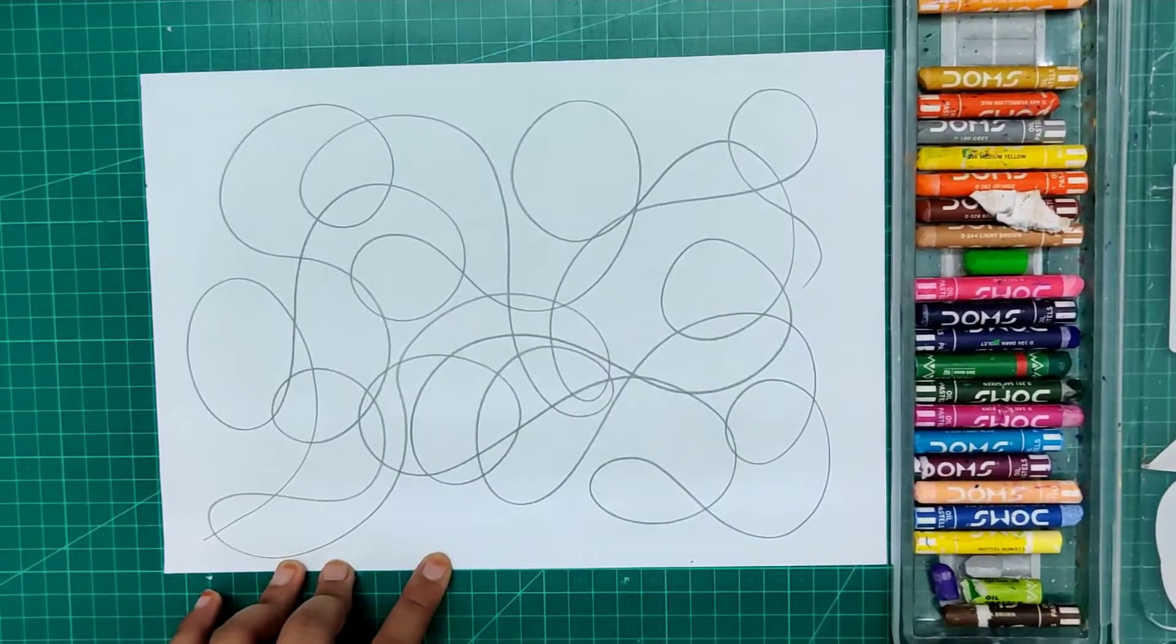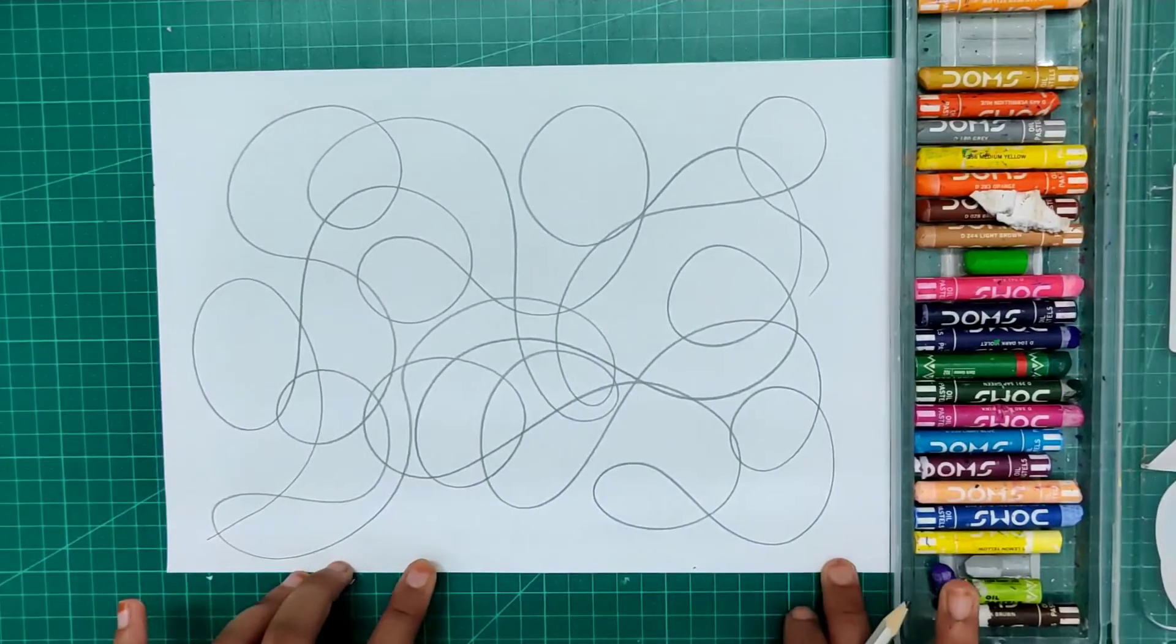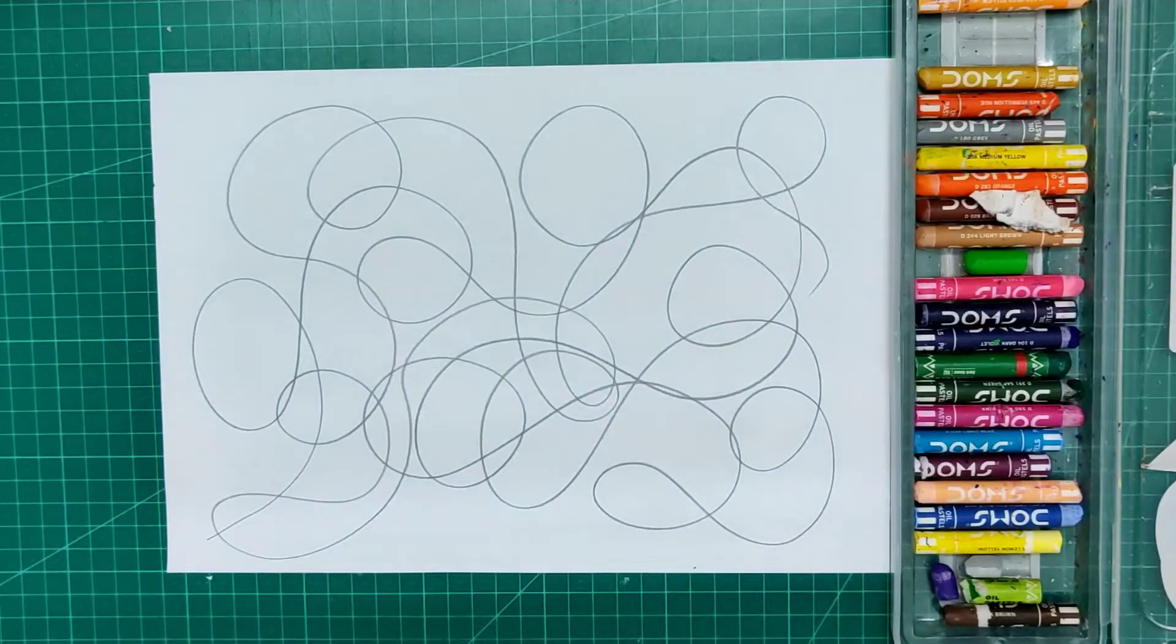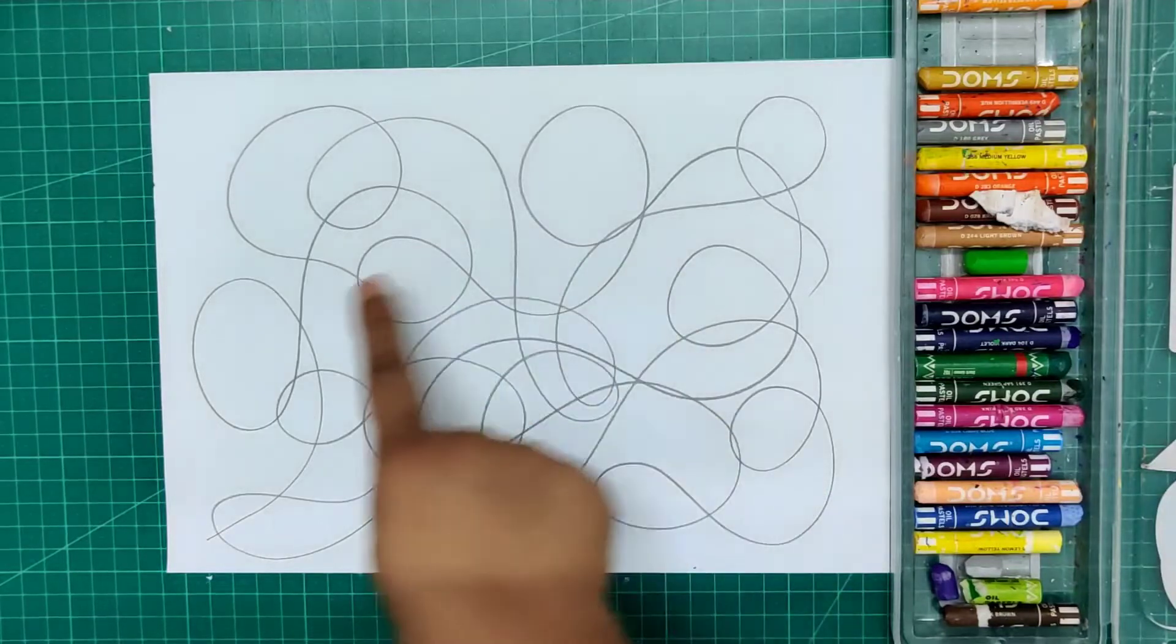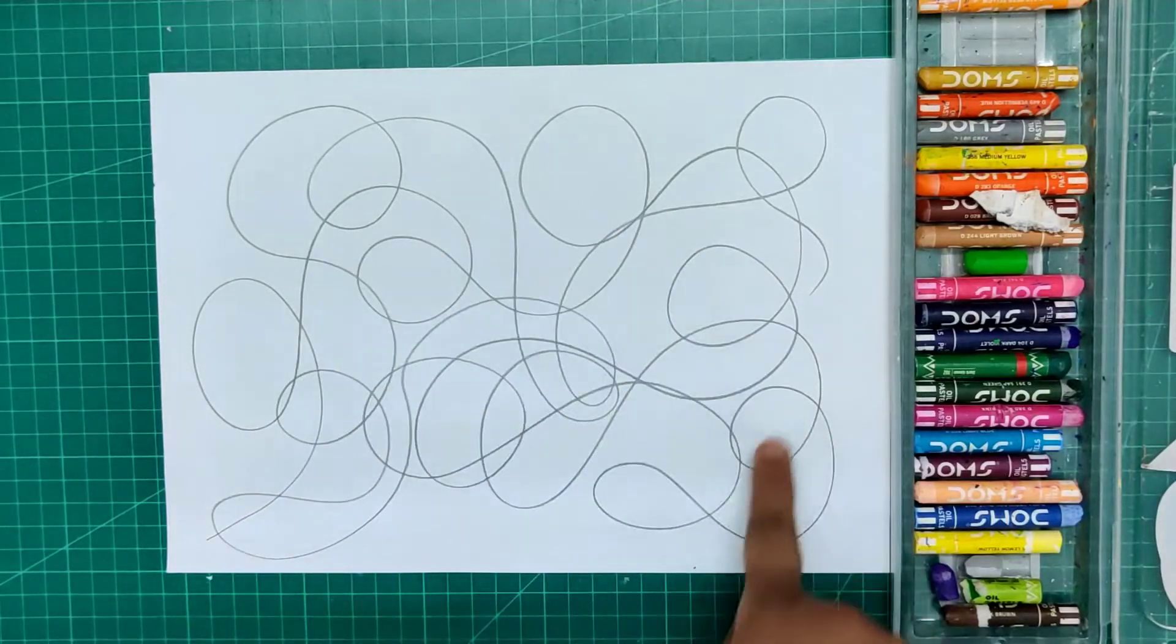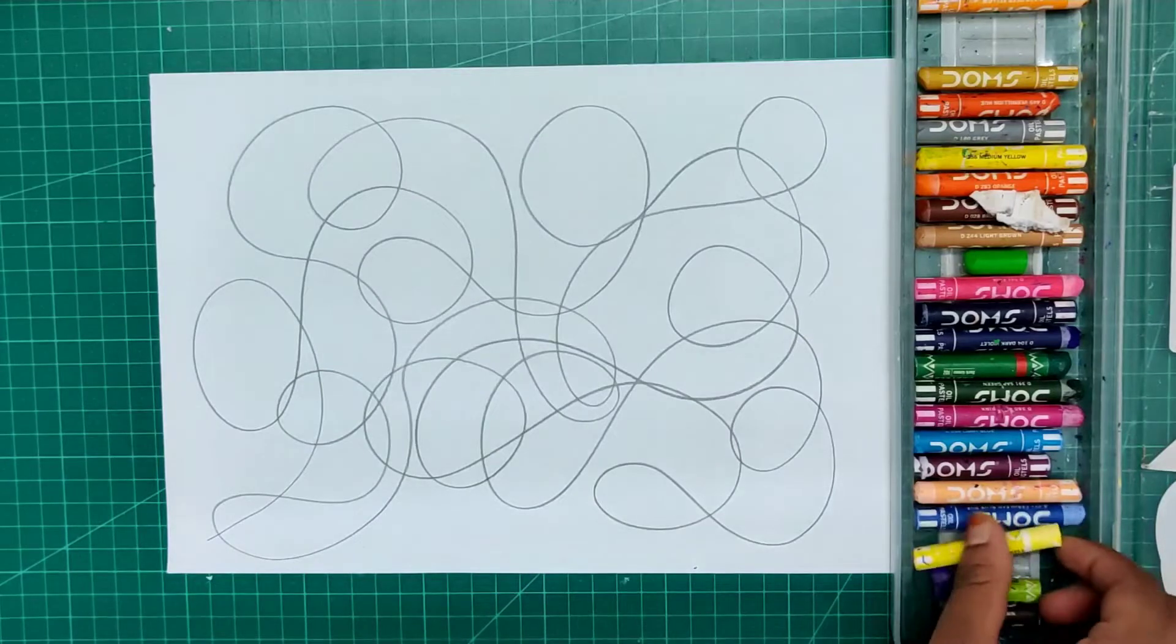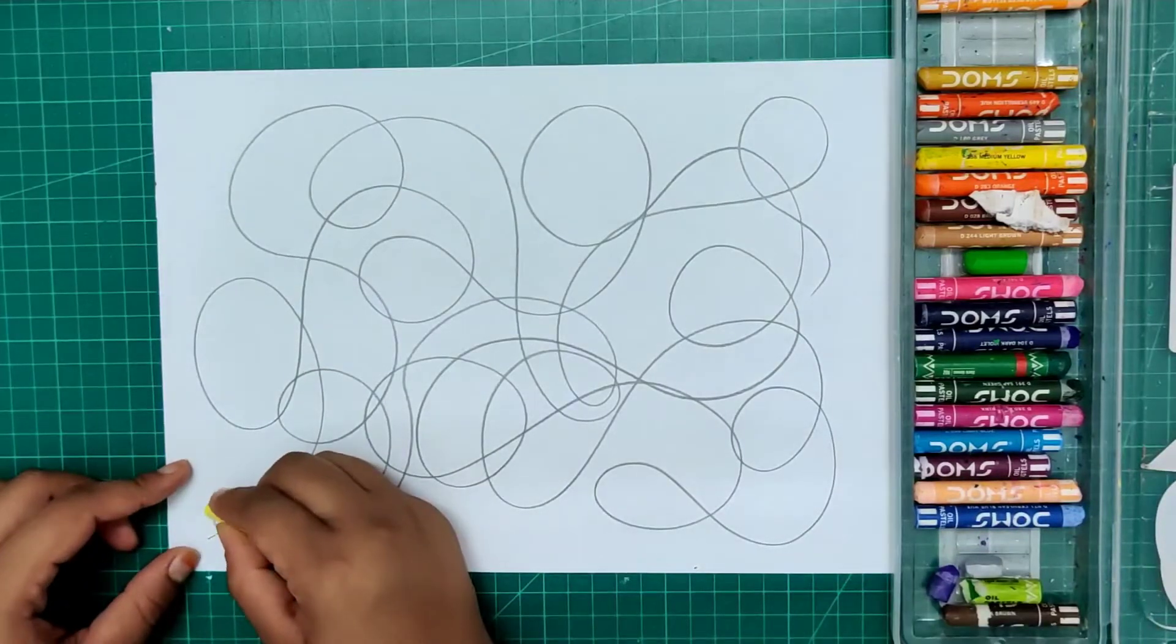So my scribbling is done. Now it's time for coloring. You all can see different shapes, so we will make different colors in all shapes.